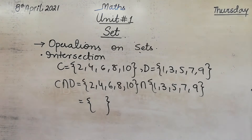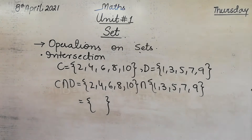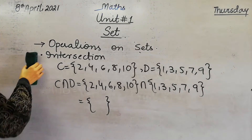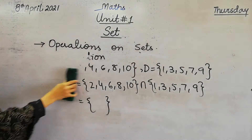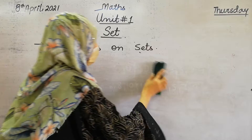The intersection of these two sets is the empty set because C and D contain no common elements. In intersection, you write the same elements. In union, you write all the elements.